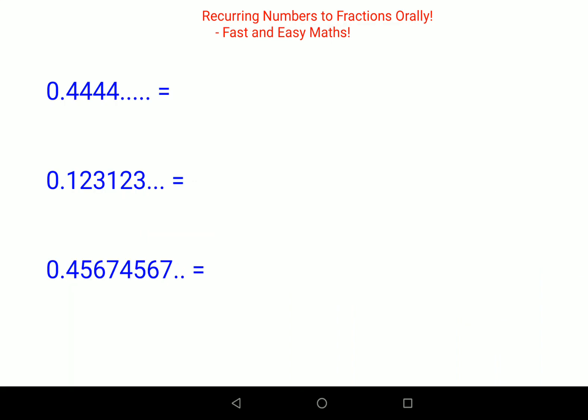Whenever you have recurring numbers which are just after a decimal point, meaning you have something like 0.4 repeated, similarly 0.123 repeated, 0.4567 repeated, in this case what you will do is you can just write the number directly as your numerator.